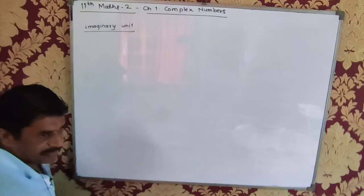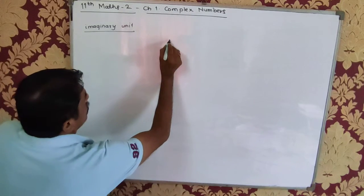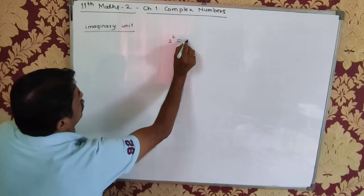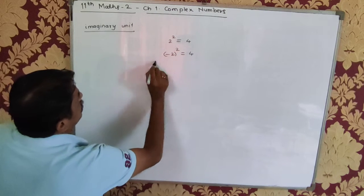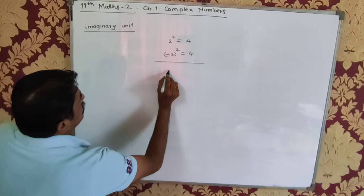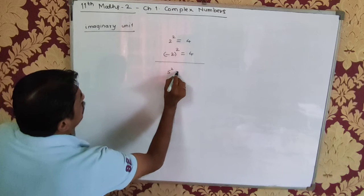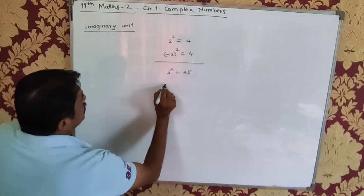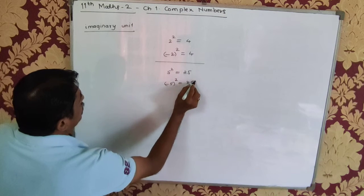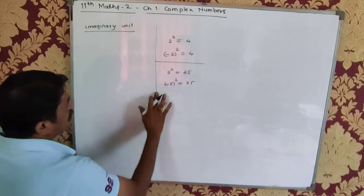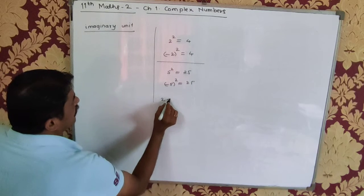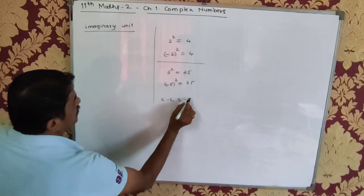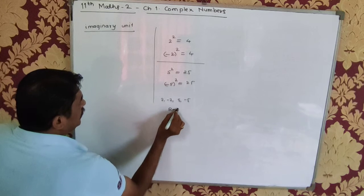Let us know: what is 2 squared? 4. What is minus 2 squared? 4. What is 5 squared? 25. What is minus 5 squared? 25. We see that 2, minus 2, 5, minus 5 — these are called real numbers.